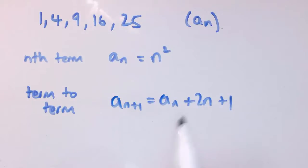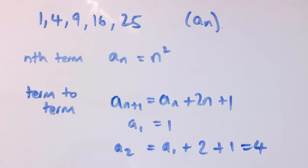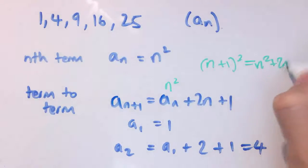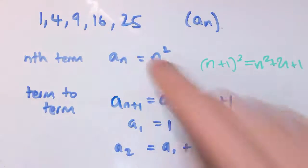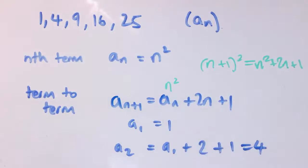Sometimes people suggest this term-to-term definition: a n plus 1 equals an plus 2n plus 1, again with a1 equals 1. For example, putting n equals 1: a2 equals a1 plus 2 plus 1, which is 1 plus 2 plus 1, which is 4. This does work, and you can see why — because n plus 1 squared equals n squared plus 2n plus 1. However, this isn't a purely term-to-term definition, because it also uses the term number n, not just the previous term. It depends on the term number, so it doesn't go from one term to the next in the same way each time.